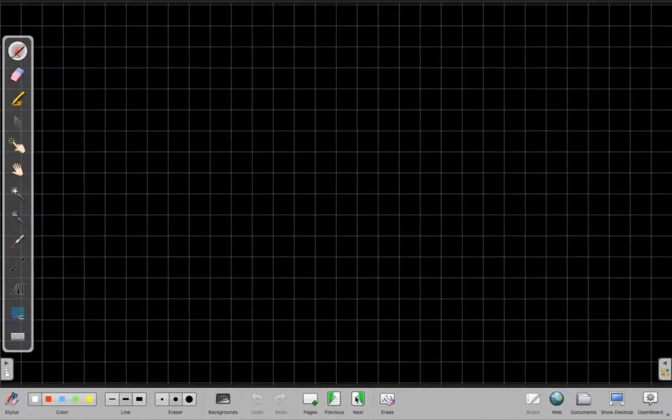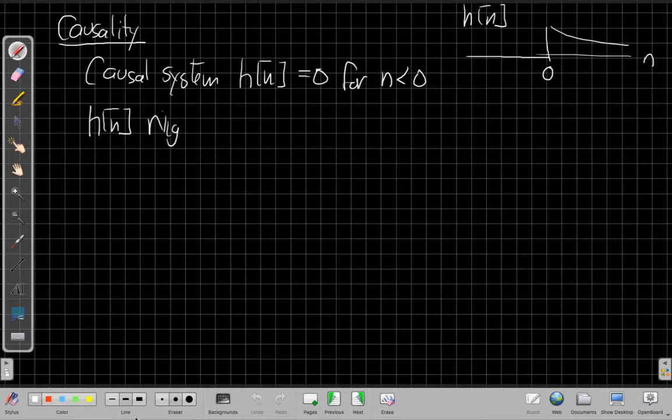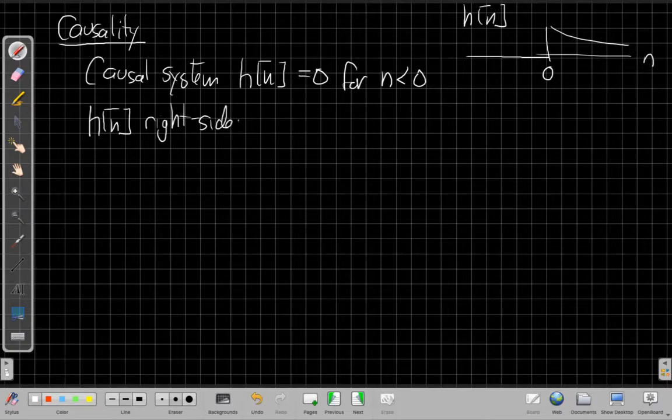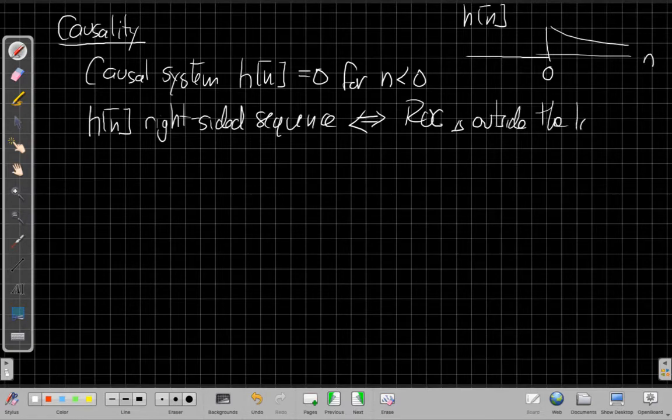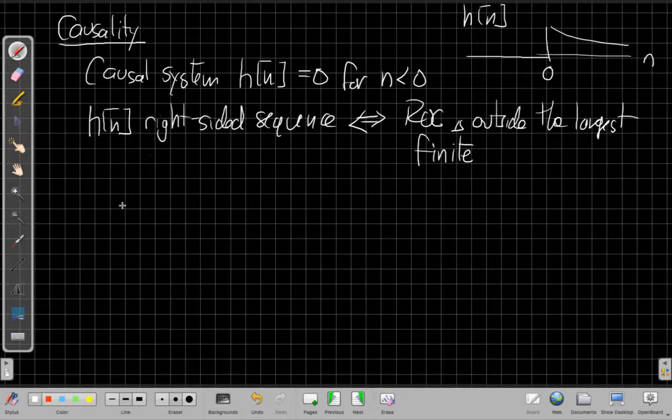So from the properties of regions of convergence, we would say this is a right-sided sequence. It turns on and then runs to the right. And so right-sided sequence means that the ROC is outside the largest finite pole. And that's one of those properties of the ROC we talked about in that video. You might want to go back and review that video if it's not at the tip of your tongue. But that's an important property when we're looking at the structure of a sequence in time. It helps us know what the ROC has to be, that it has to run outside.